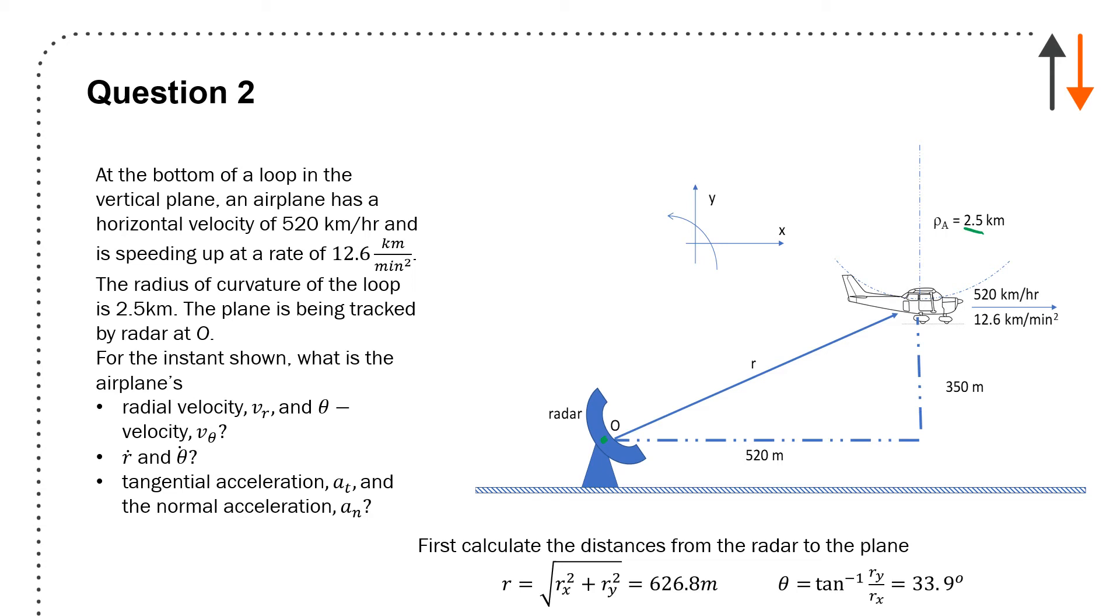First we want to know the distance r from the origin O to the plane. We're given 520 meters horizontally and 350 meters up, so total distance r = 626.8 meters and the angle θ = 33.9 degrees. I can get that directly from geometry.